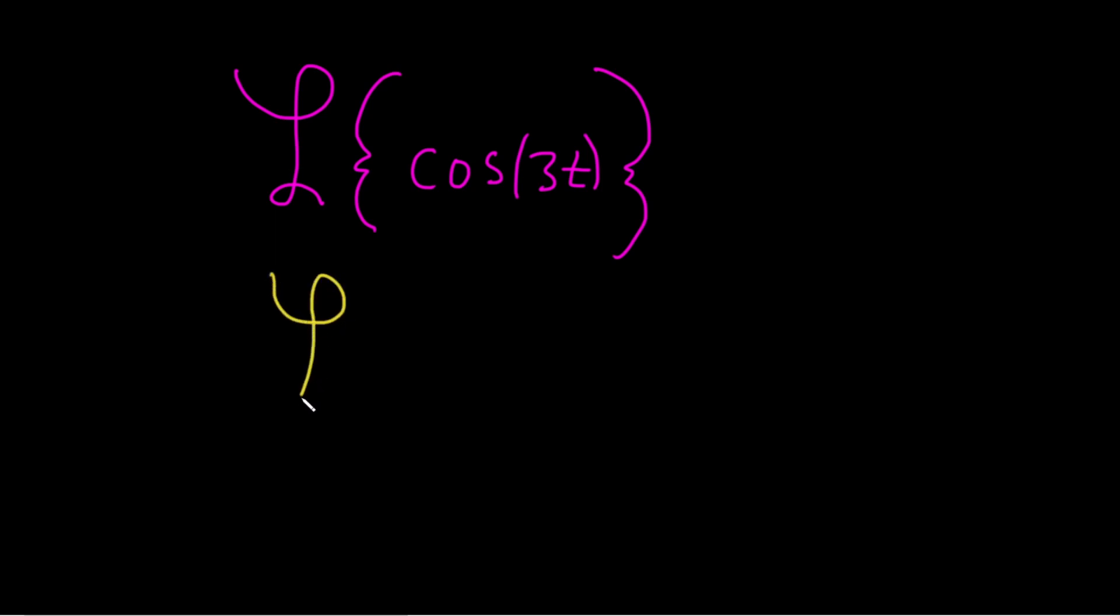You have the Laplace transform of the cosine of kt. This is equal to s over s squared plus k squared.